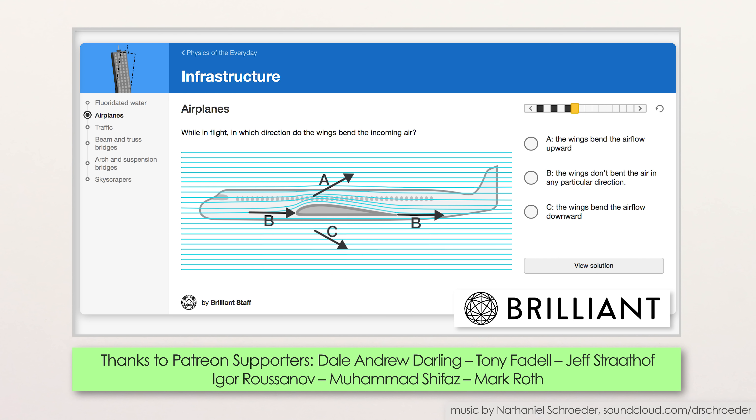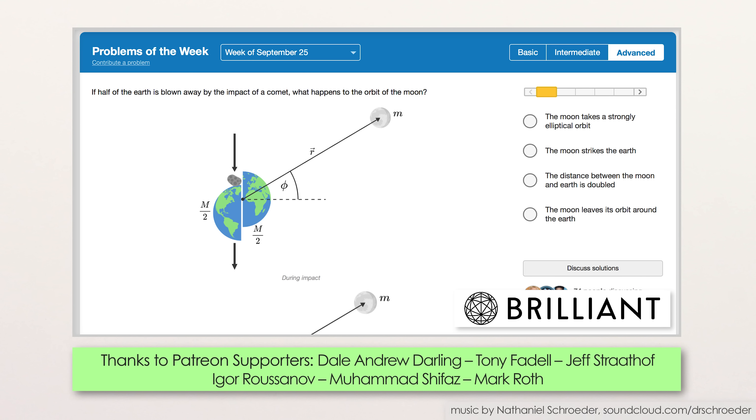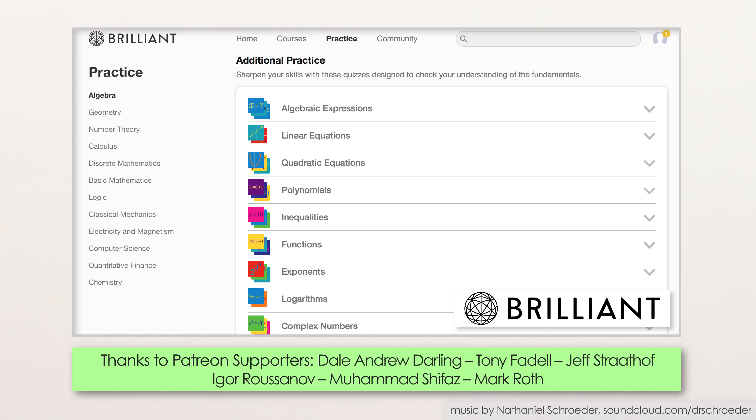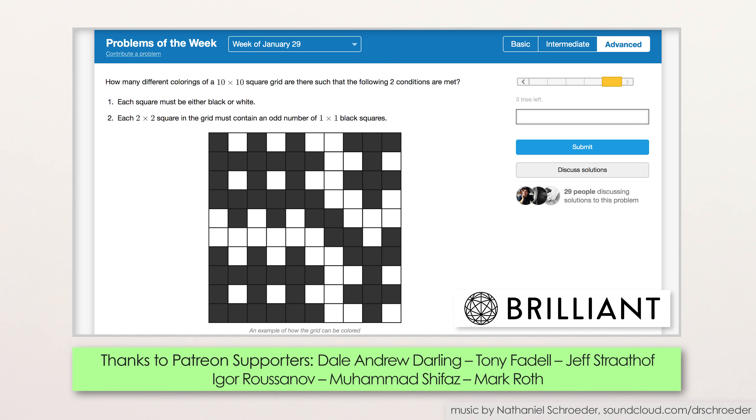As you've probably heard me say before, if you want to understand physics deeply, you really have to think through ideas and solve problems yourself, and Brilliant offers a great way to do just that, either by learning a new topic like neural networks, practicing problem solving in an area you already know like algebra, or solving tricky puzzles like this one.